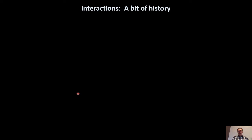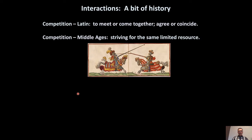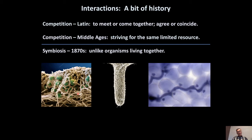A bit of history about how we talk about interactions. The most commonly studied type of interaction is competition. The original definition of competition has some perhaps more positive implications than you would expect — it has to do with meeting or coming together, agreeing or coinciding. In the Middle Ages, an additional meaning emerged: striving for the same limited resource, such as the hand of a maiden or land. This is the meaning we generally associate with competition, very central to ecology and evolution.